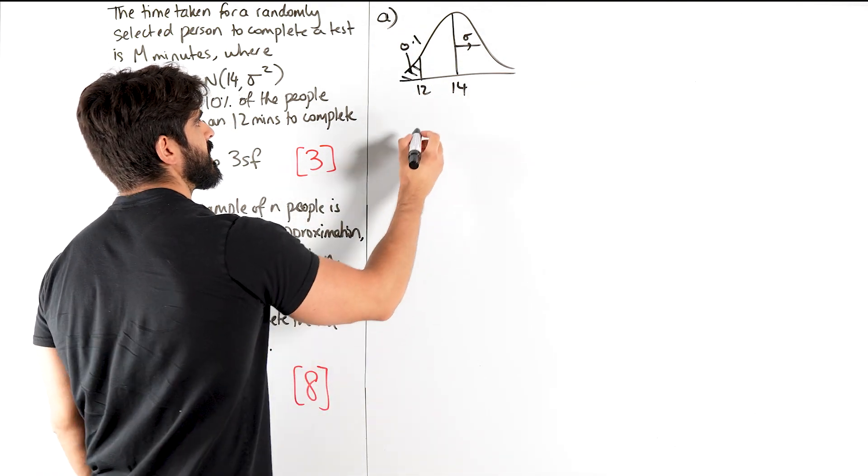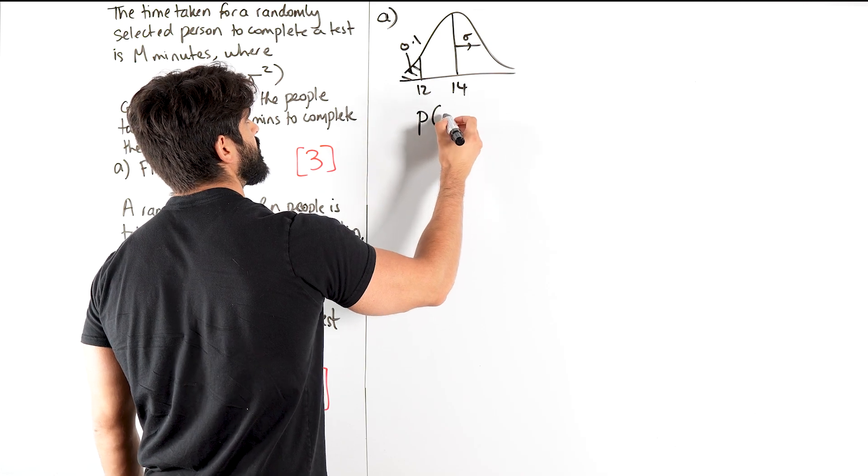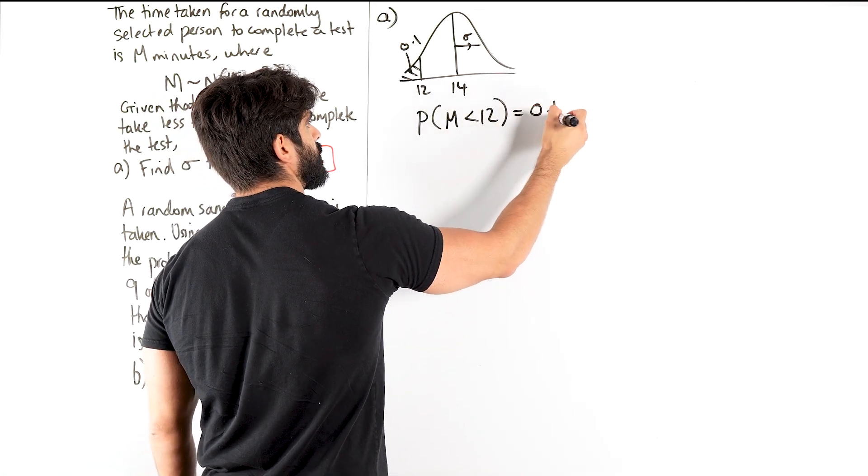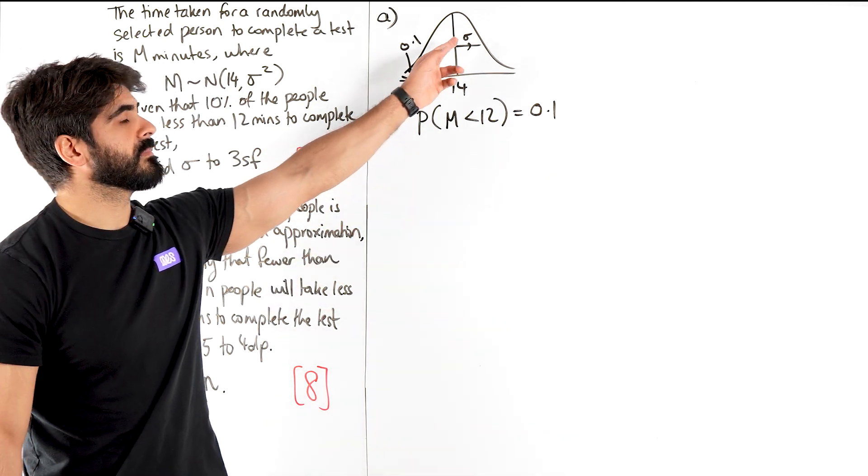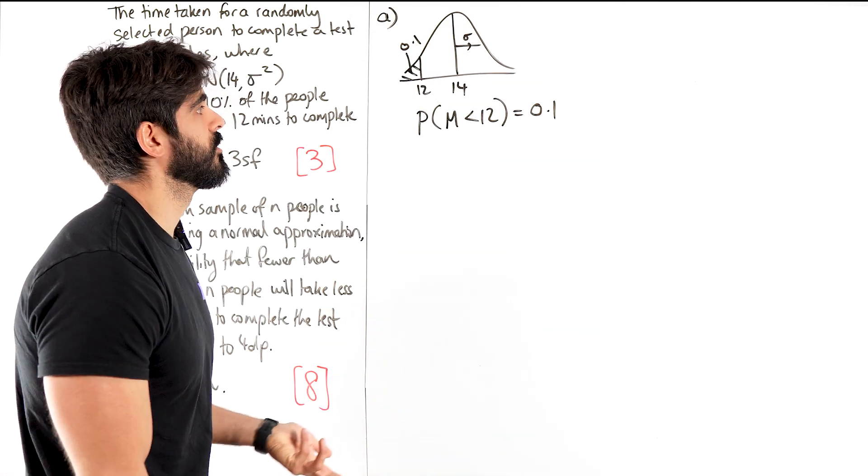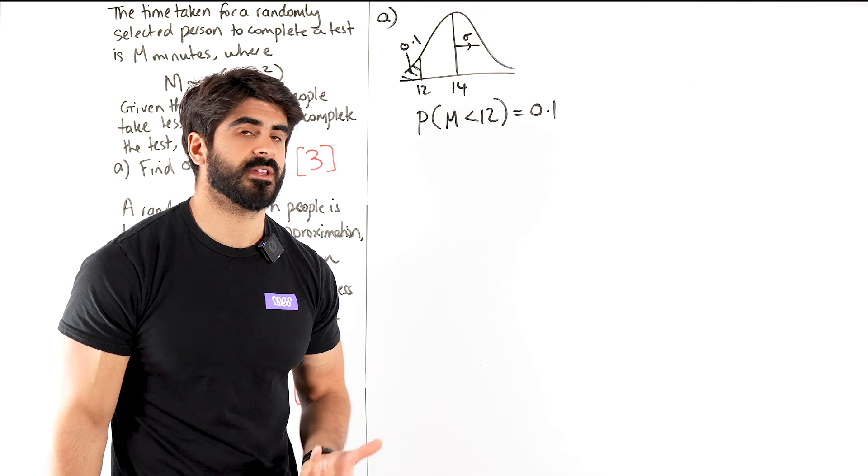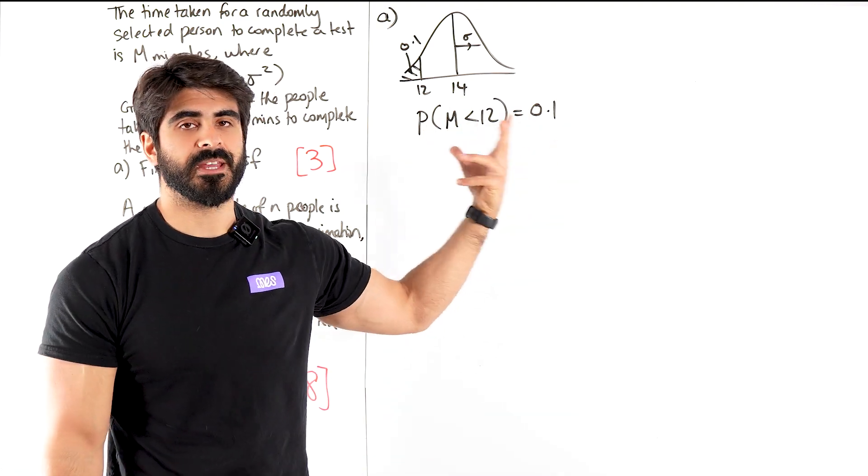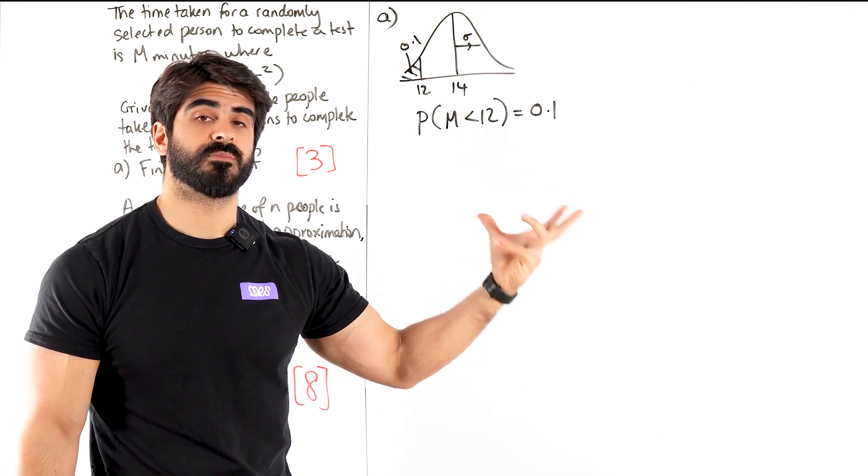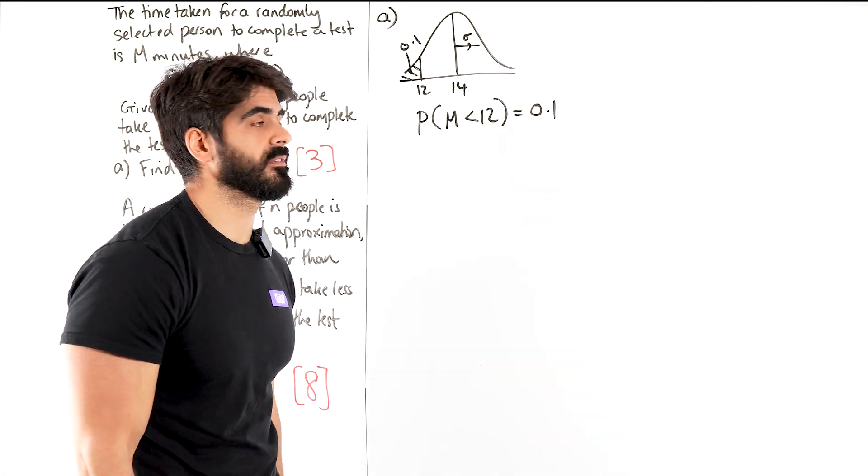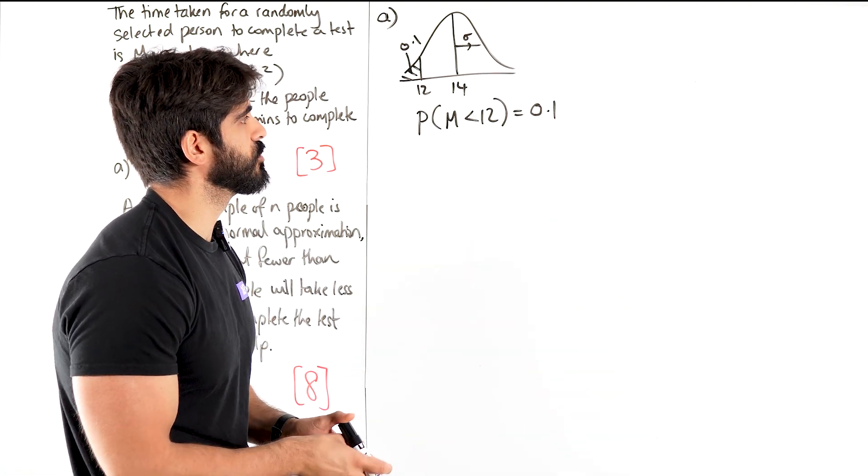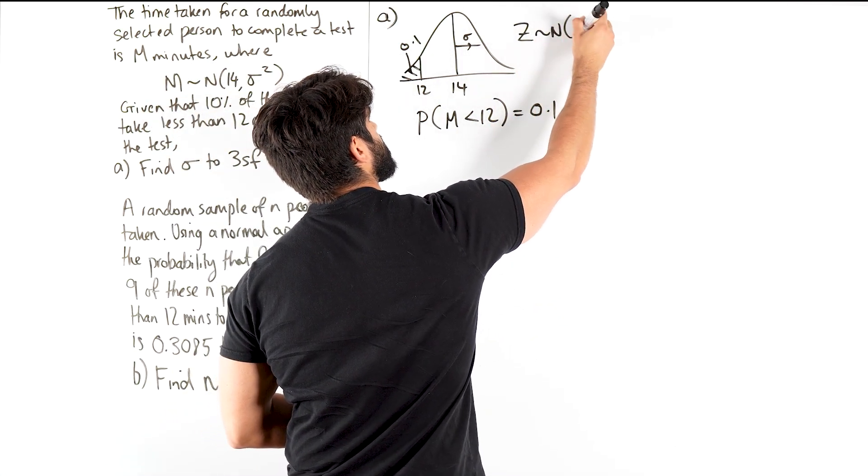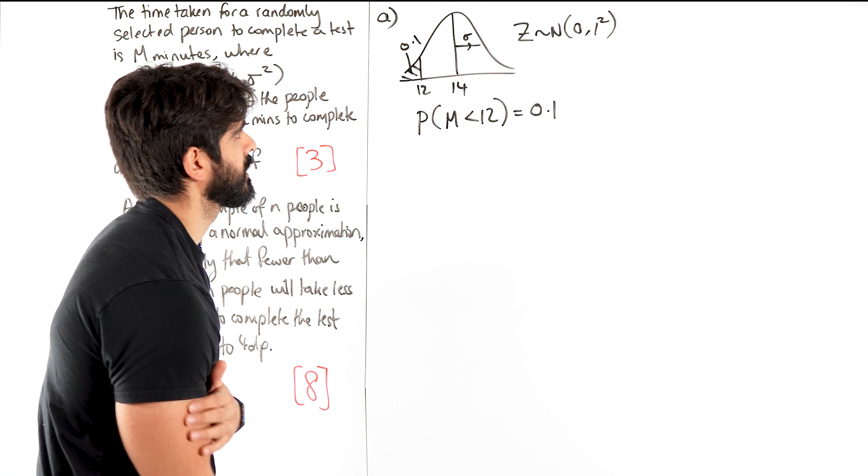So you write down the probability statement. So the probability that M is less than 12 is 0.1. Now because sigma is unknown, whenever mu and sigma are unknown, we can't input things into the calculator. So what we do is we do the Z transformations to get to a distribution that we do know the mean and standard deviation. Now we know the Z distribution has a mean of 0 and a standard deviation of 1.